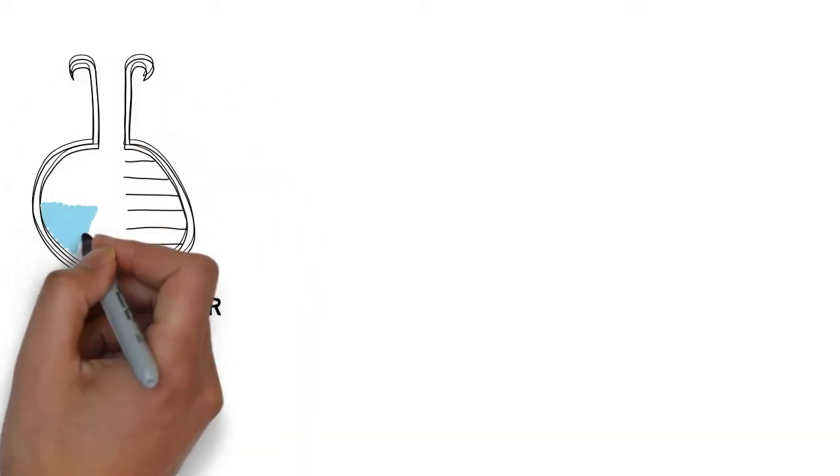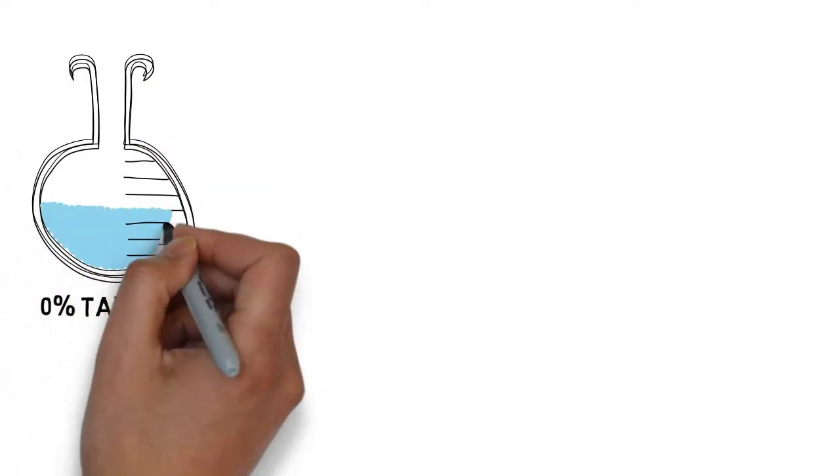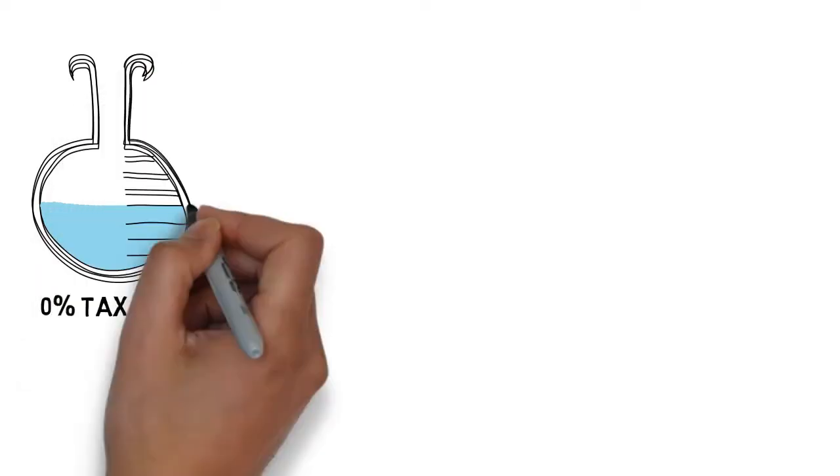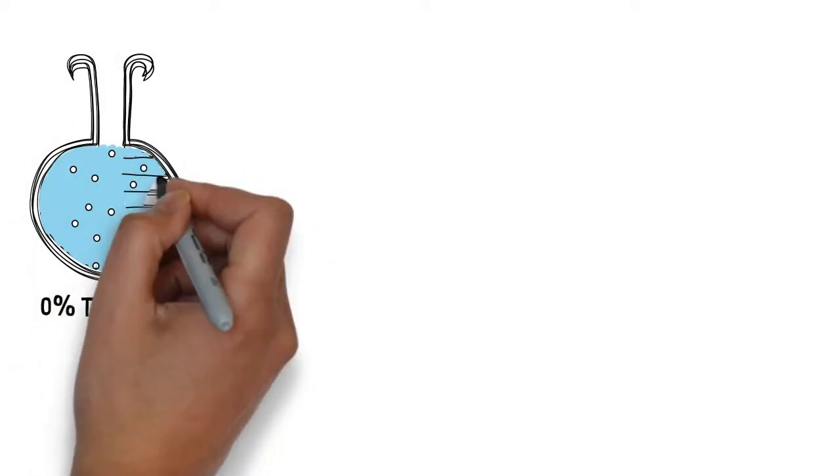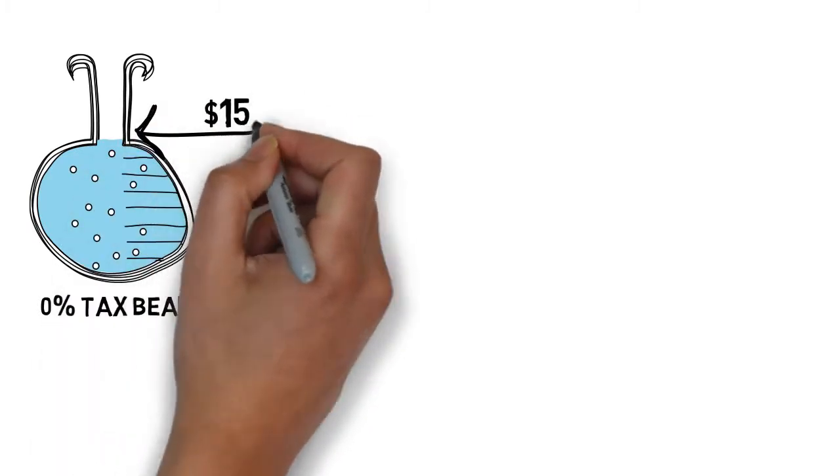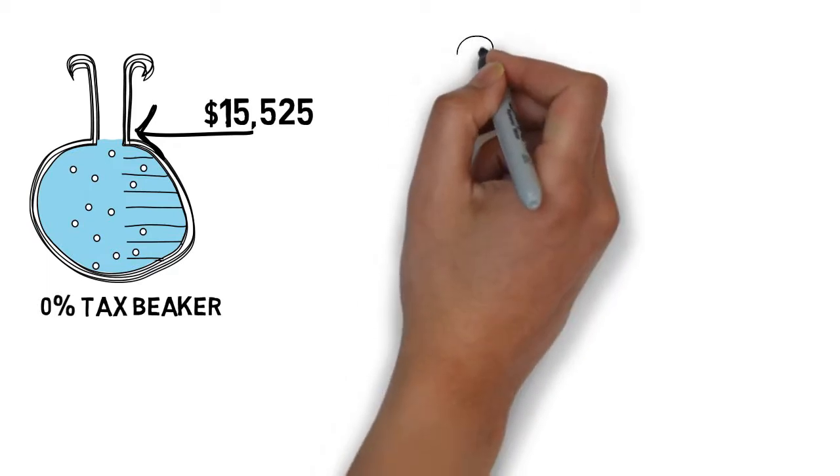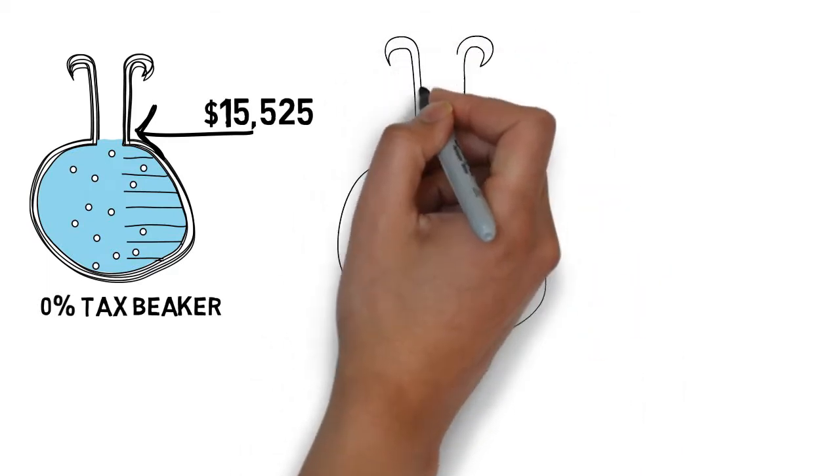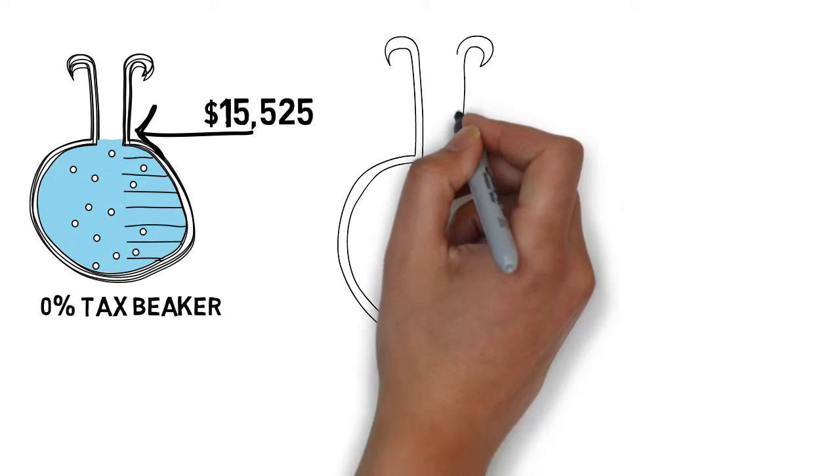For instance, if you are single and you earn $15,526, that income flows into the next beaker like a waterfall. In that case you would owe ten cents tax because you went one dollar over the $15,525.